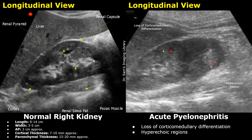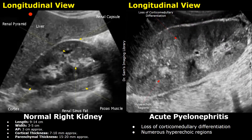This is another case of acute pyelonephritis of the right kidney. There is loss of corticomedullary differentiation, and we can also see hyperechoic regions within the kidney. There is a focal hyperechoic region at the lower pole. This additional image of acute pyelonephritis also shows loss of corticomedullary differentiation and numerous hyperechoic regions. These findings, if seen with high grade fever and flank pain, do suggest pyelonephritis.